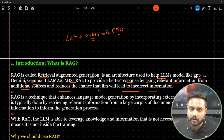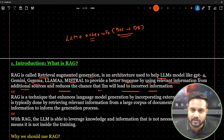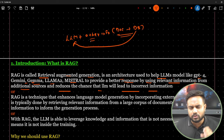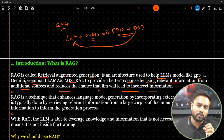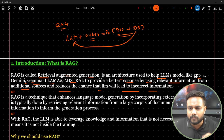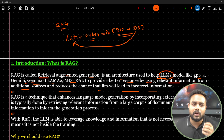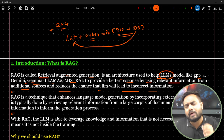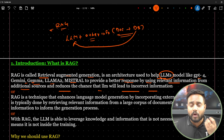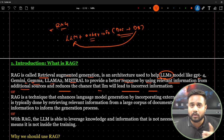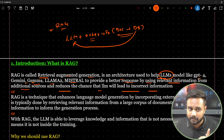If I want to make my model more efficient, or task-specific, domain-specific, or problem-specific, I can use RAG or fine tuning. Another definition: RAG is a technique that enhances language model generation by incorporating external knowledge — retrieving relevant information from a large corpus of documents and using that to inform the generation process.